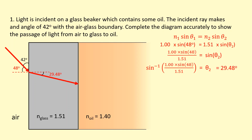Now we put that on the diagram and consider what happens at the glass-oil boundary. Drawing on the normal, we know we're going into a less optically dense medium, so the light bends away from the normal. However, it won't bend away so much that it's parallel to the original ray in air — it will just bend away slightly.